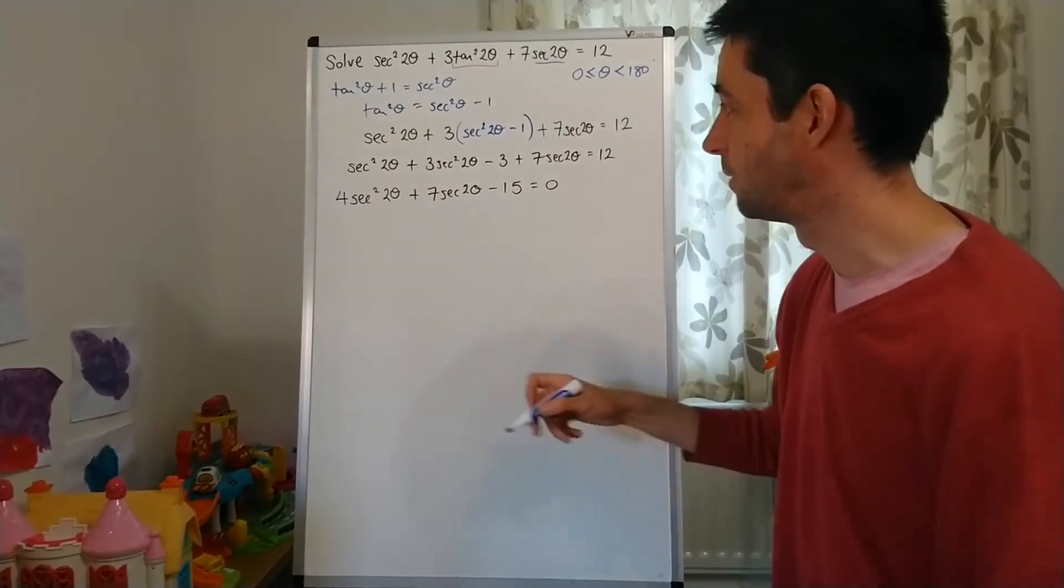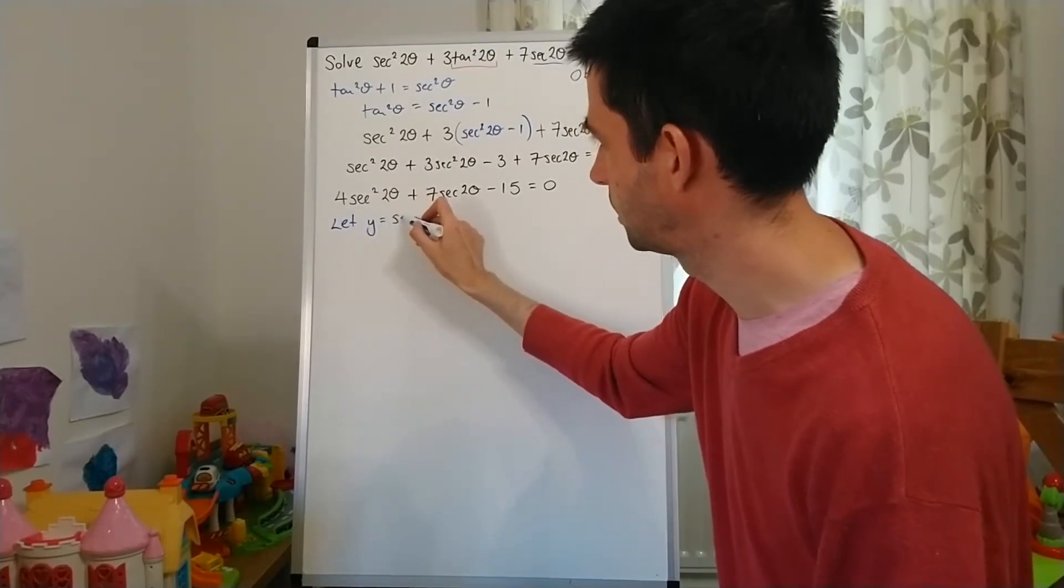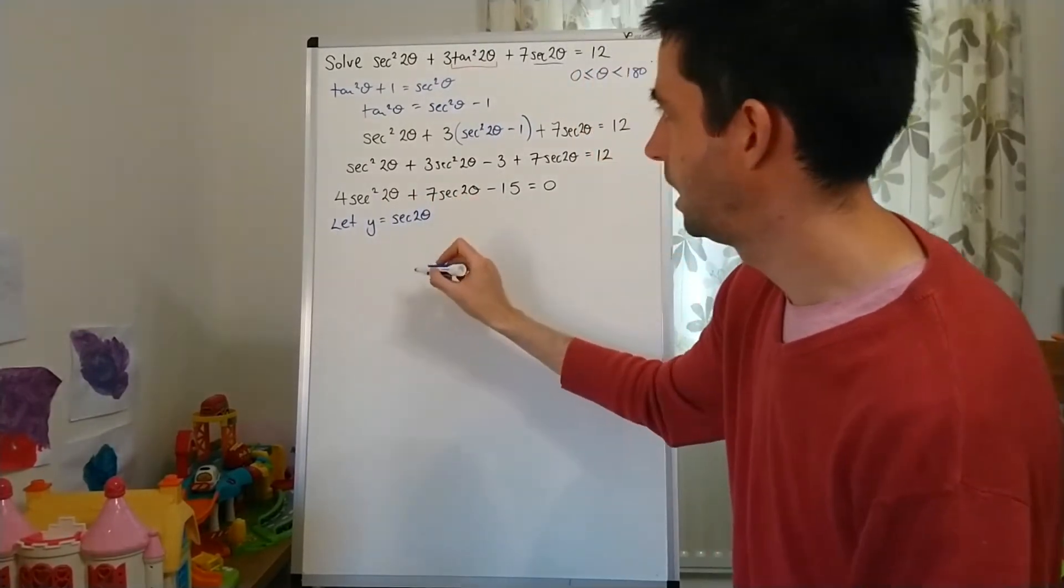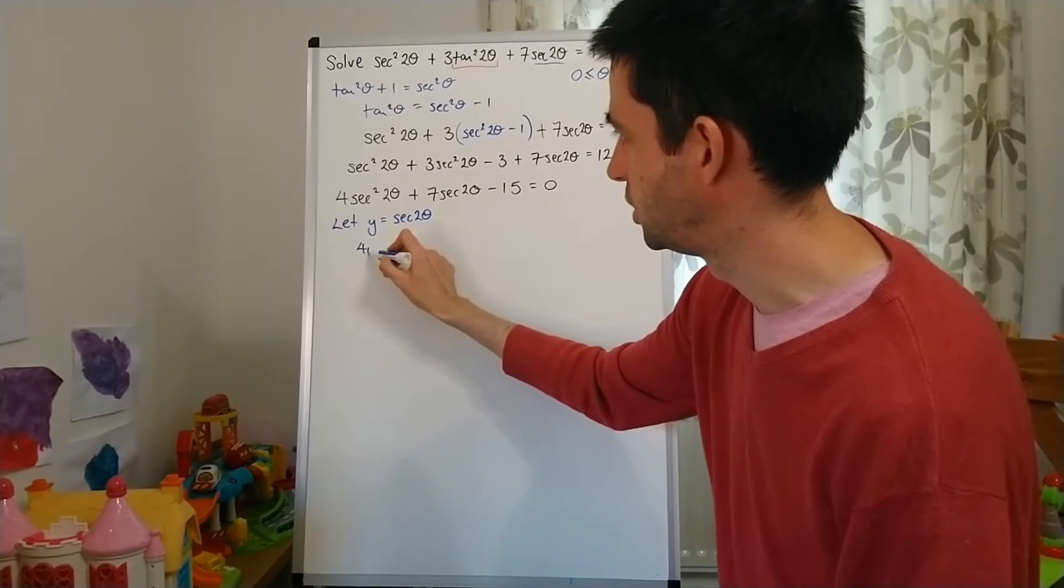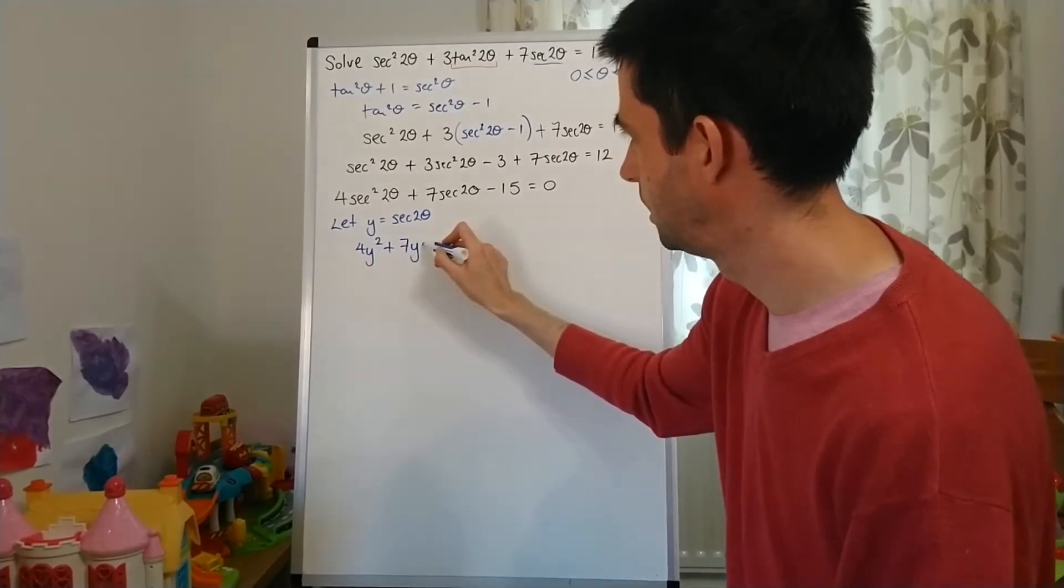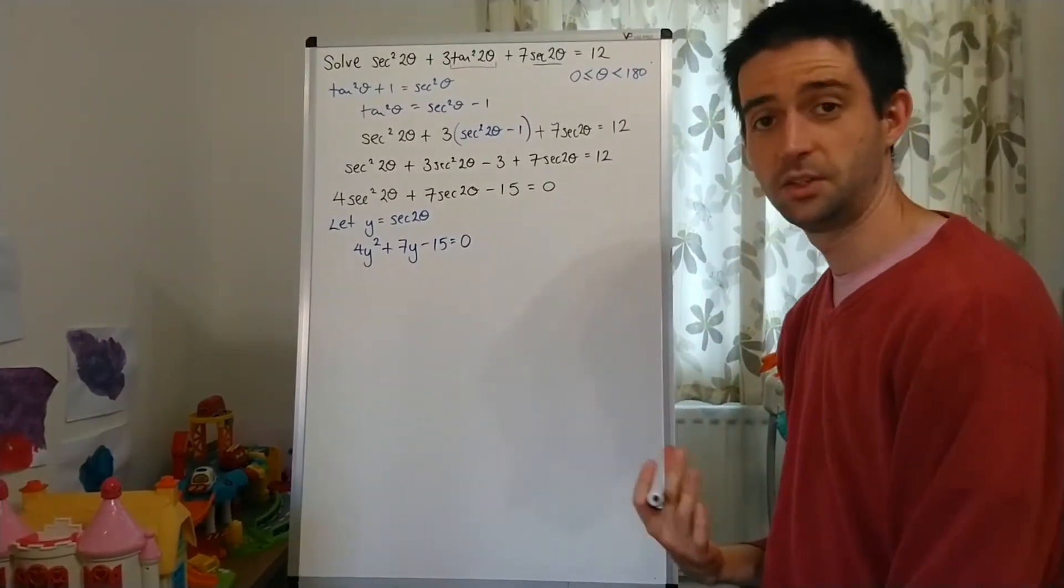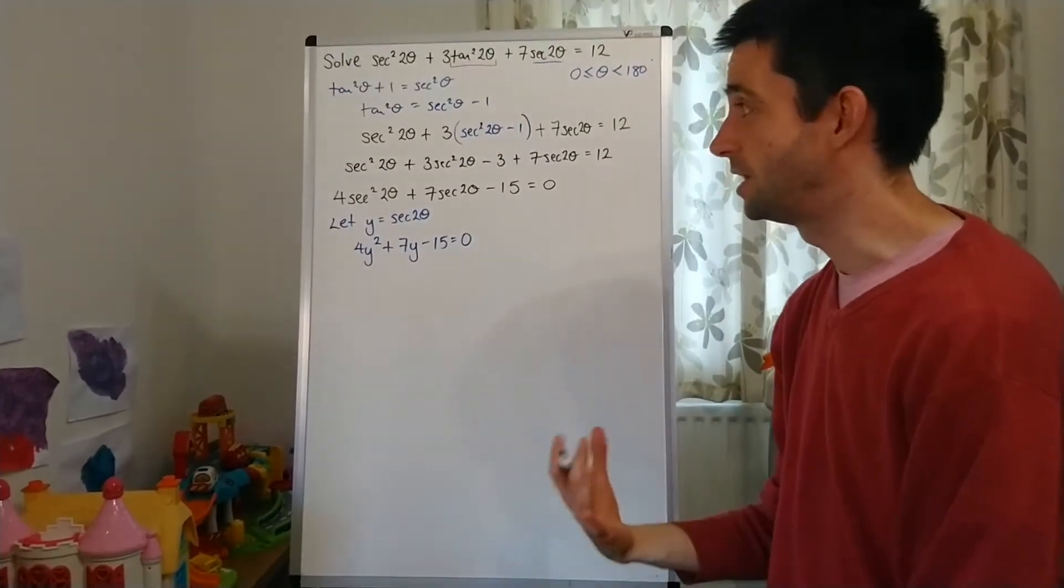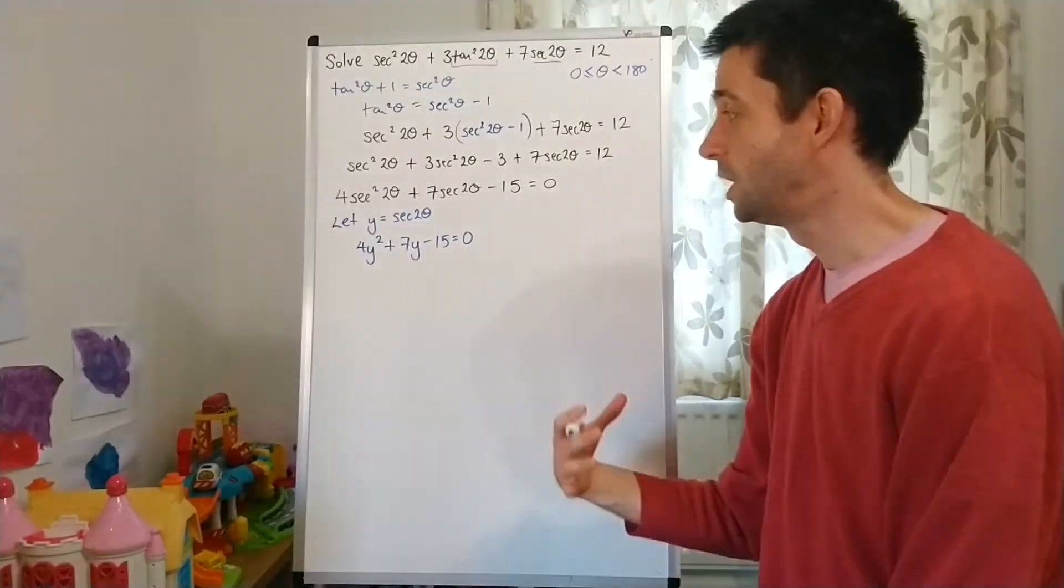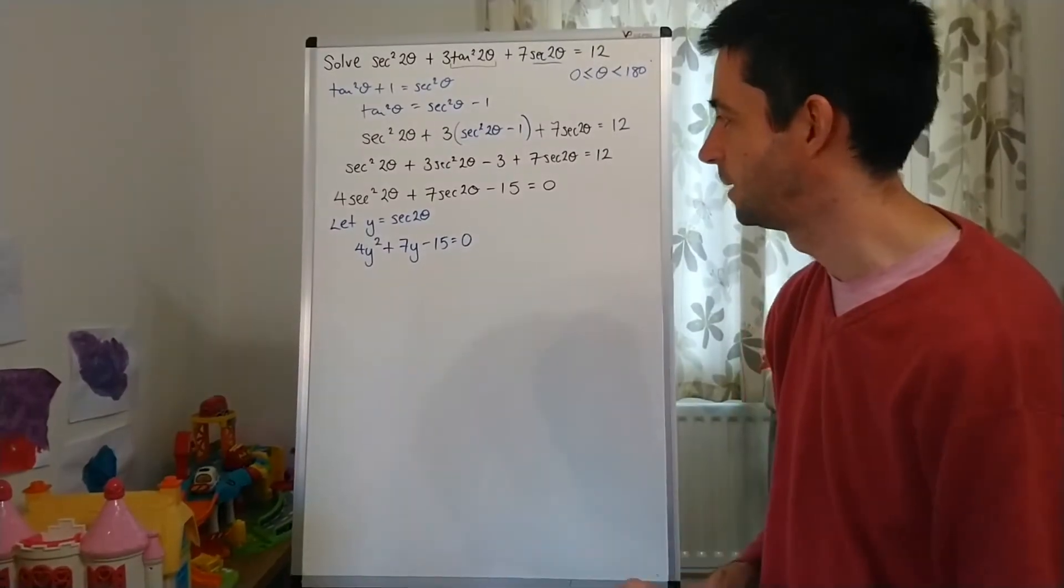Now, students tend to be more comfortable at this stage saying, let y = sec2θ. And that would transform this equation to be 4y² + 7y - 15 = 0. And what I'd then be looking to do is to factorise and solve this equation here.